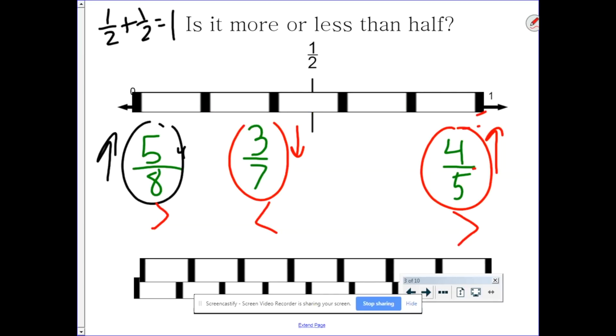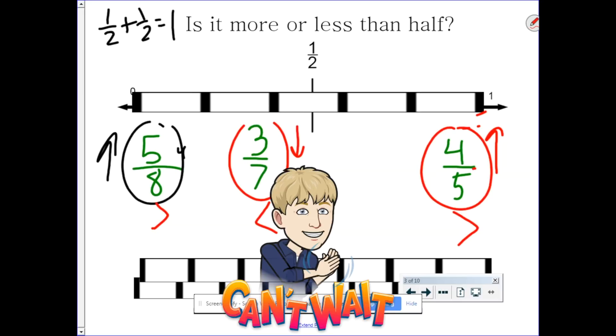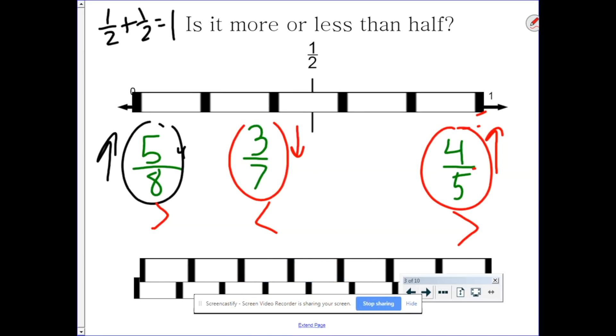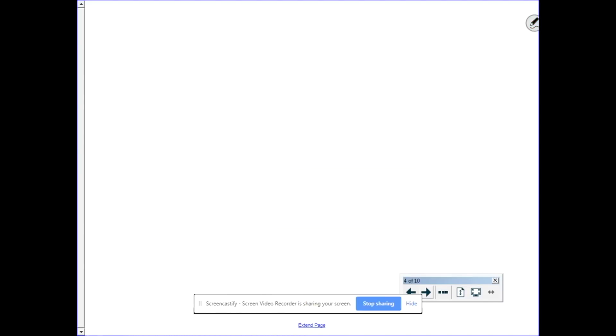All right, I'm going to show you another strategy that doesn't involve pictures. Let's go back to something that we know is equal to one-half. So let's go to two-fourths. Well, if we double two, we get four. Notice how that's equal to the denominator. So if you double the numerator, and it's equal to the denominator, you know it's equal to one-half.